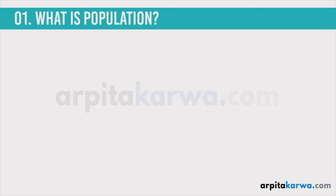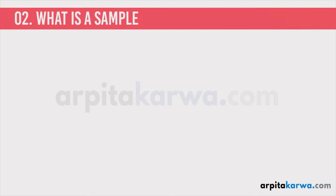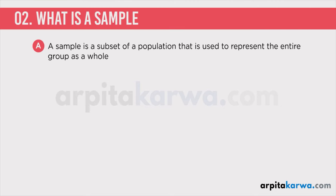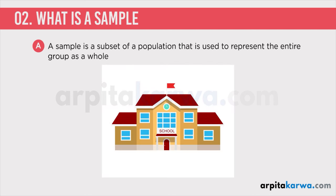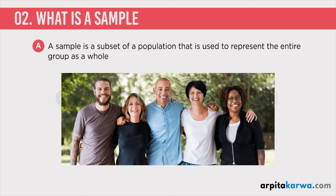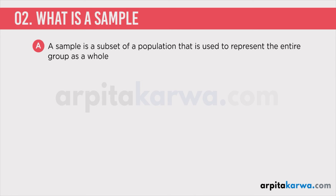Now that we have understood what a population is, it's time to look at what a sample is. A sample is a subset of a population that is used to represent the entire group as a whole. So if a population has a thousand people, we take a hundred people as our sample, and these hundred people represent the entire group. Just like if there is a school with 500 students, I take any five students and ask them several questions, and on the basis of their answers, I form my opinion about all the students in that school. I am taking a sample and on the basis of the sample, generalizing my result to the entire group.